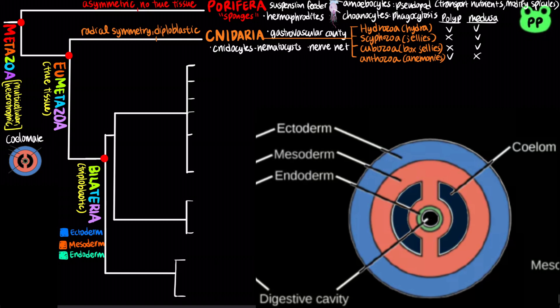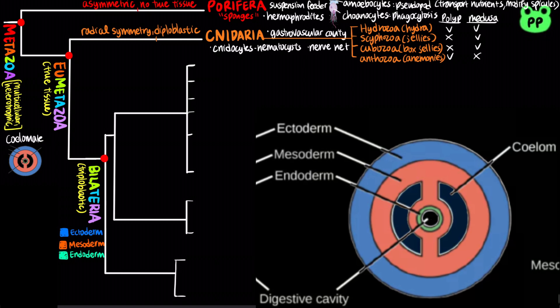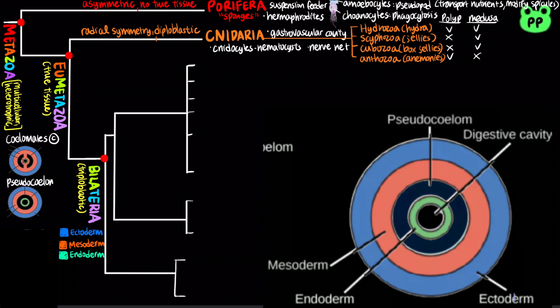Coelomates are animals that possess a true coelom, which is derived from mesoderm. Pseudocoelomates contain a body cavity derived from the mesoderm and endoderm. Acoelomates lack a body cavity.